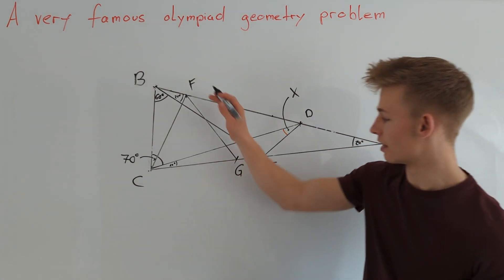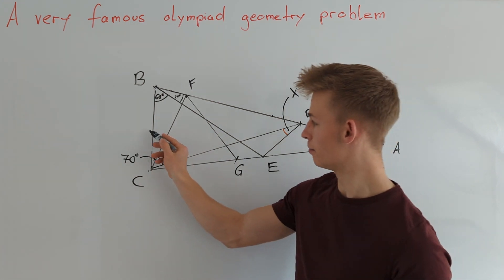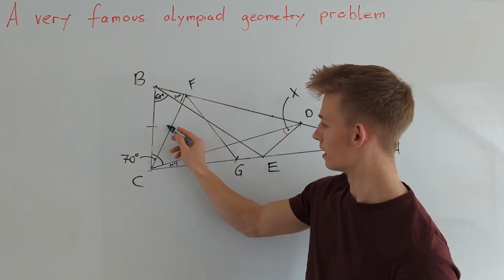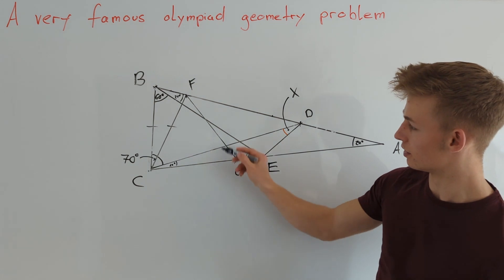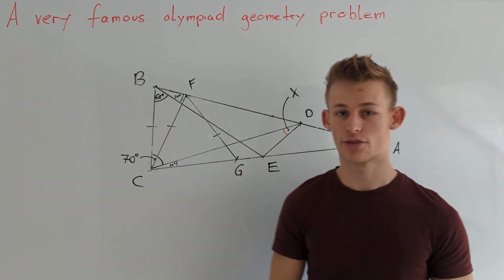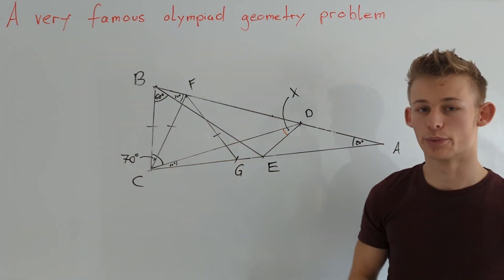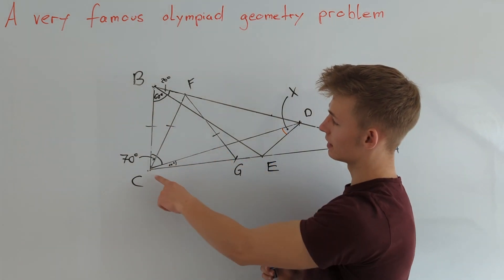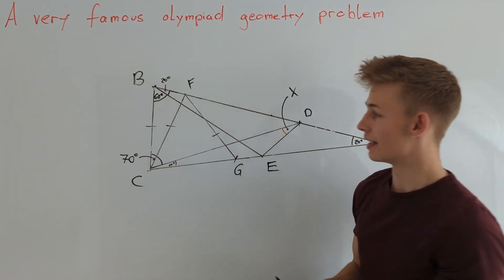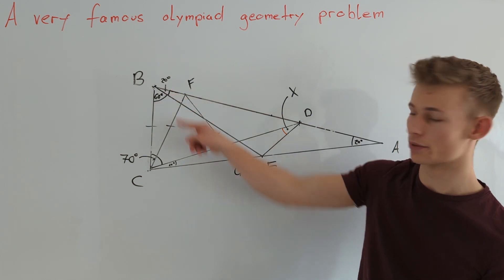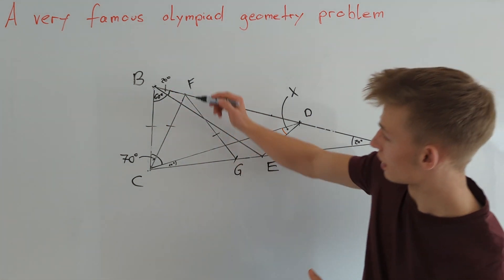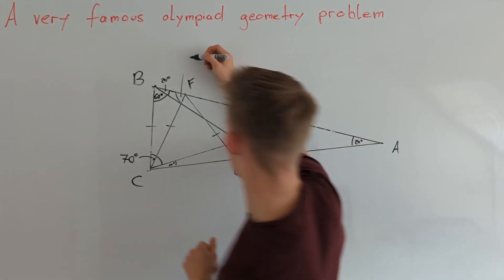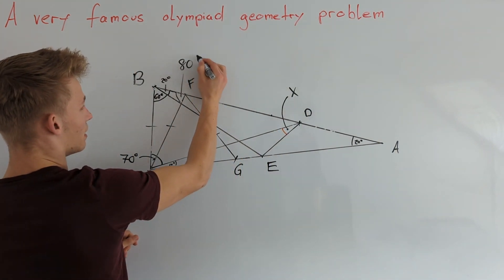I introduce points F and G in such a way that BC is equal to FC and FC is equal to FG. Now let's try to evaluate some angles and see what happens. Since BC is equal to CF and the angle here is equal to 80 degrees, we must also have that this angle here is also 80 degrees.